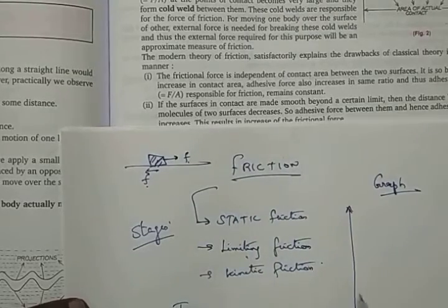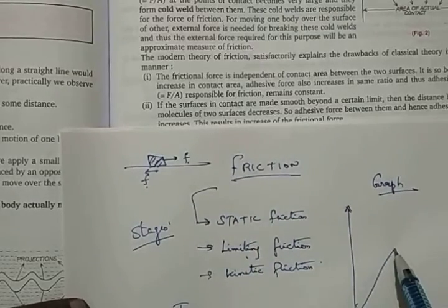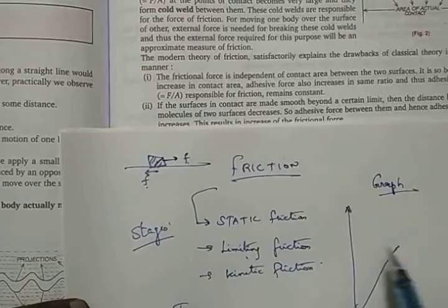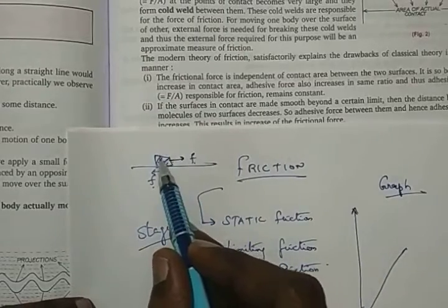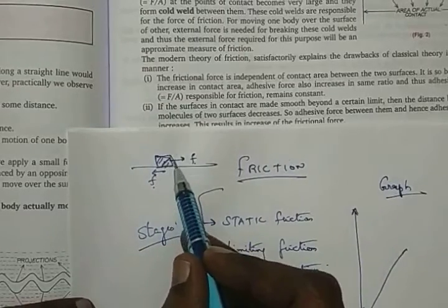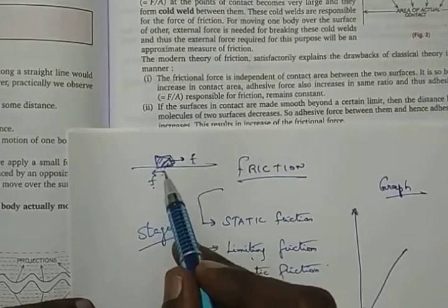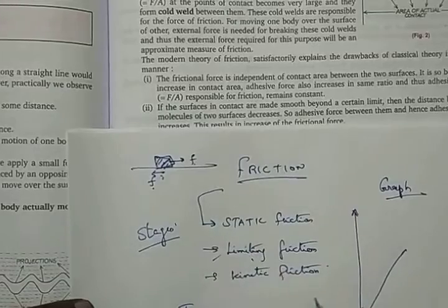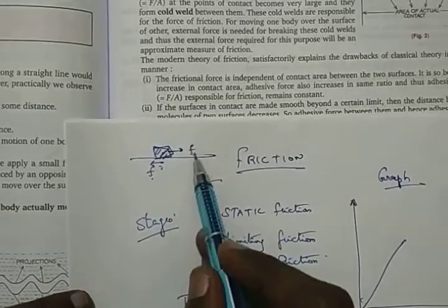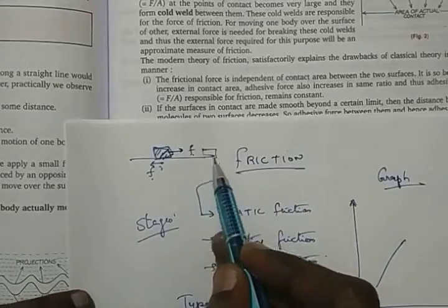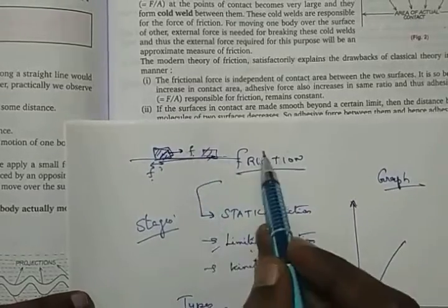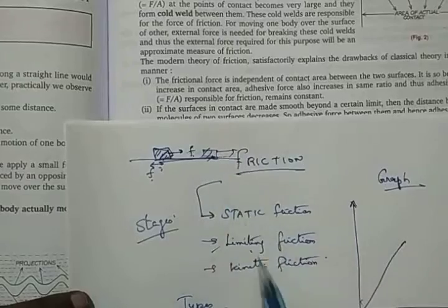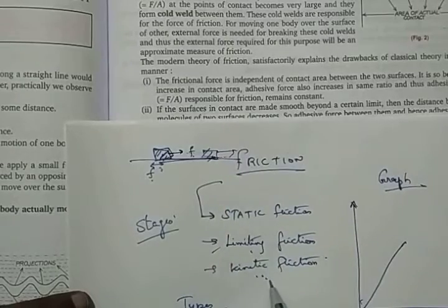The next one is called limiting friction. At a certain point — the last point before the body starts moving — the maximum friction is called limiting friction, which we already know. After that, when the body is already in motion and moving continuously because of the force, that is called kinetic friction.